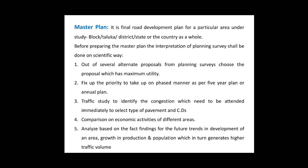Control devices may include traffic signals, the provision of speed breakers, dividers, etc. Next is the comparison of the economic activities of the different areas — what sorts of economic activities will be served on the proposed plan for different proposals of the road to reach from destination A to destination B. Lastly, analyzing the fact findings for the future trends in the development of an area, the growth in its production and population, which in turn generate higher traffic volume.